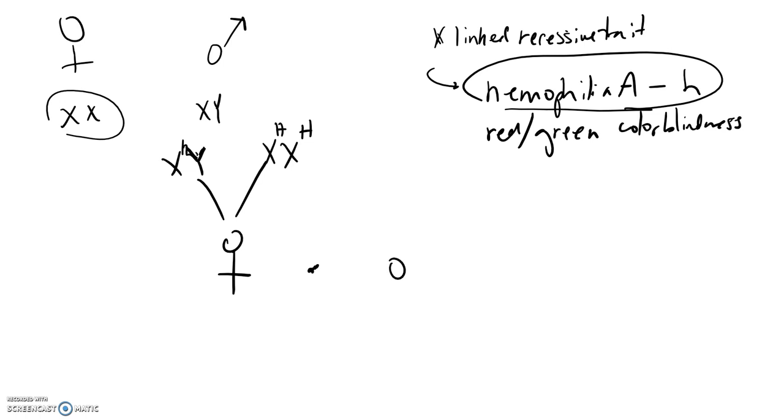So the woman, the father of the potential children, the woman's husband, he is completely normal. He's not a hemophiliac, so he has a normal gene. So let's do the Punnett Square.